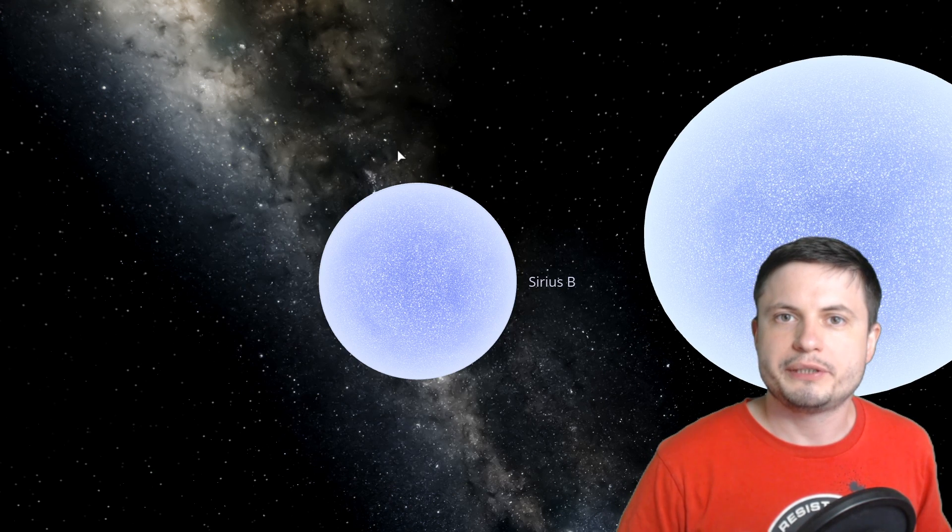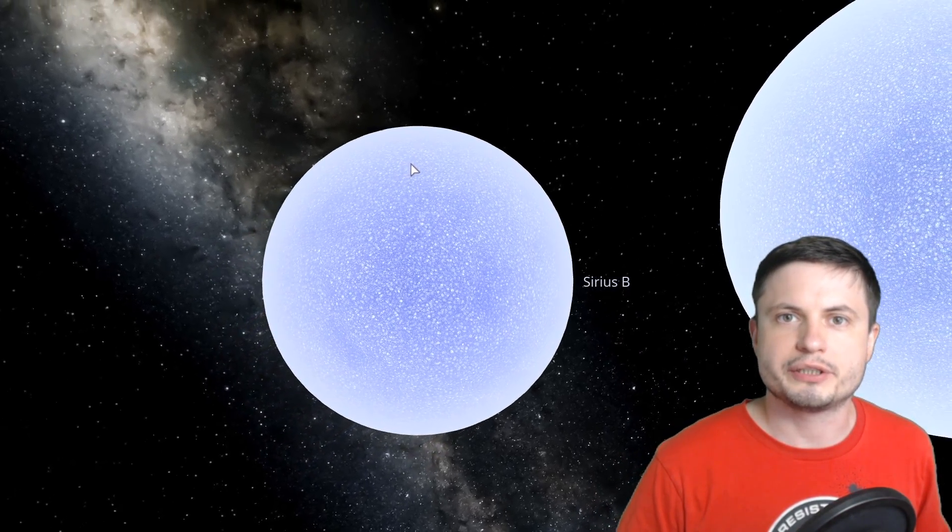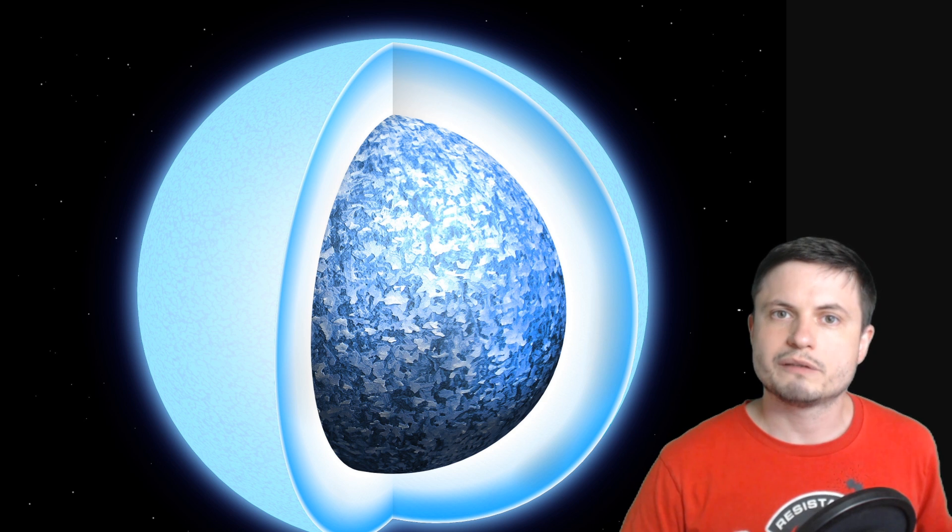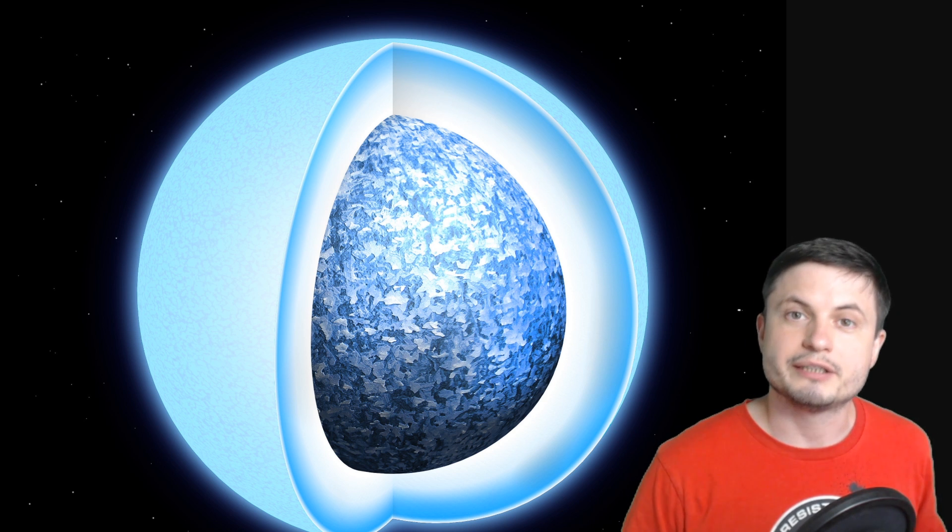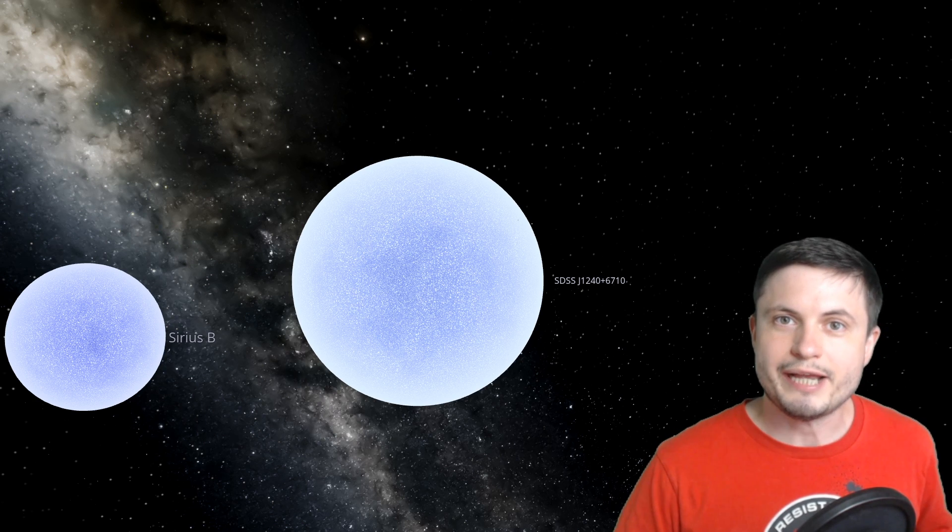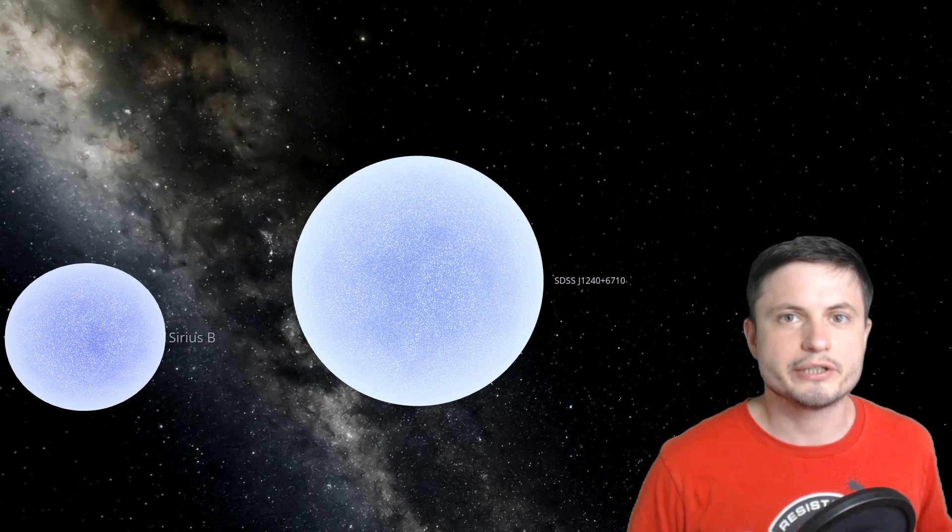So for example, for Sirius B here, its atmosphere is mostly made out of hydrogen and helium, with some carbon and oxygen present as well, most of which is actually inside the object in the core. For example, our sun is very likely going to become something very similar in a few billion years from now. But this star doesn't seem to have any hydrogen and helium, and instead has a mixture of neon, oxygen, magnesium and silicon, and that is a very strange combination.